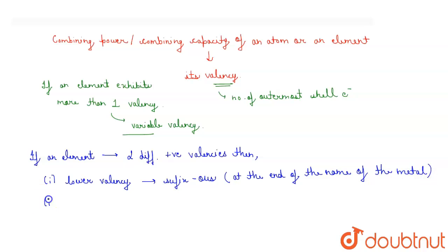And for higher valency, we use the suffix -ic at the end of the name of the metal. Now coming to the example.